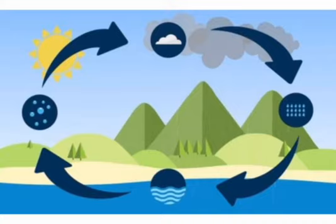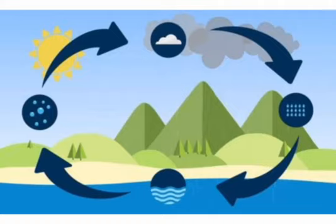Water vapor rises in the air, cools, and forms small water droplets. These water droplets form clouds. Inside the clouds, the small drops of water join and form big drops. These big drops become so heavy that the clouds cannot hold them any longer.